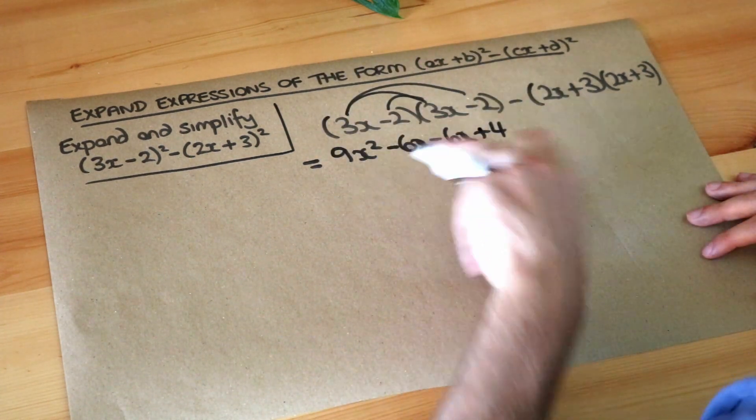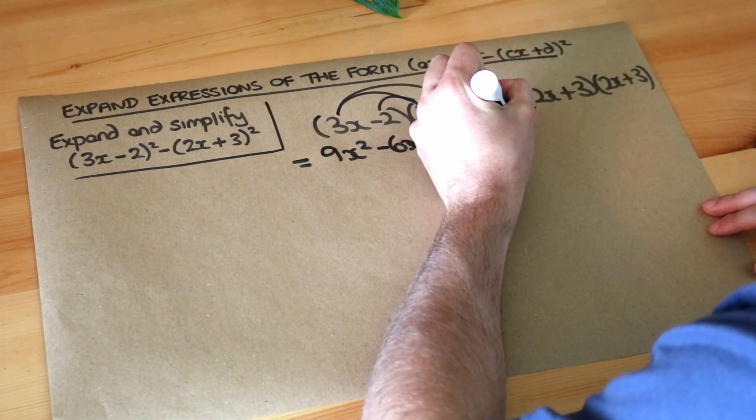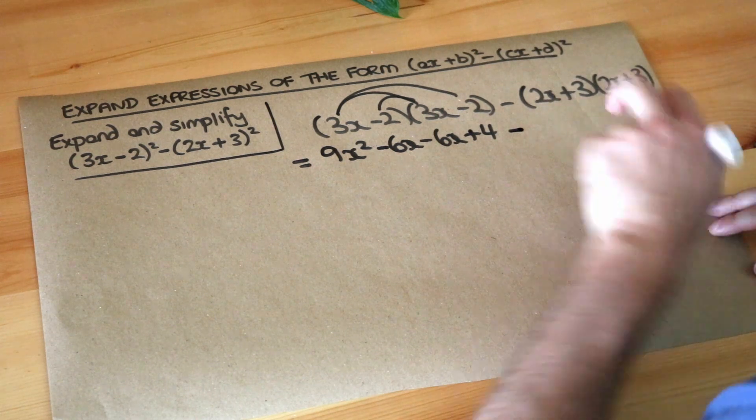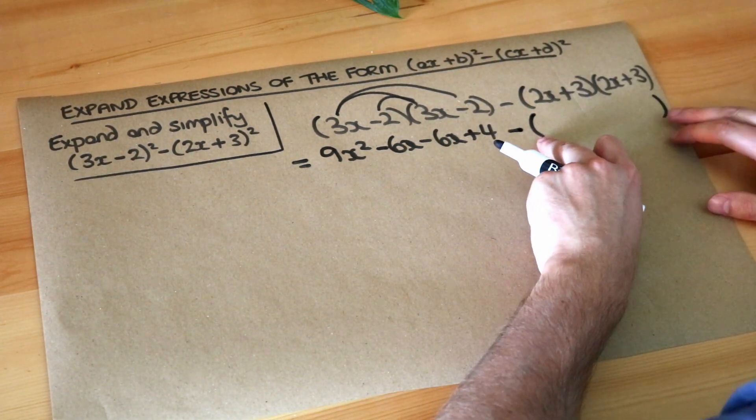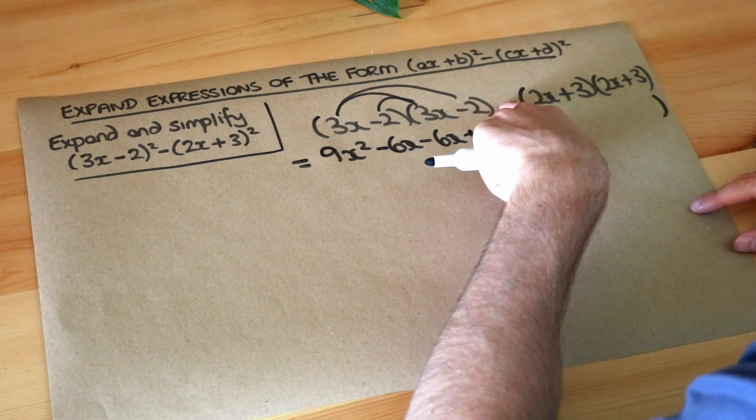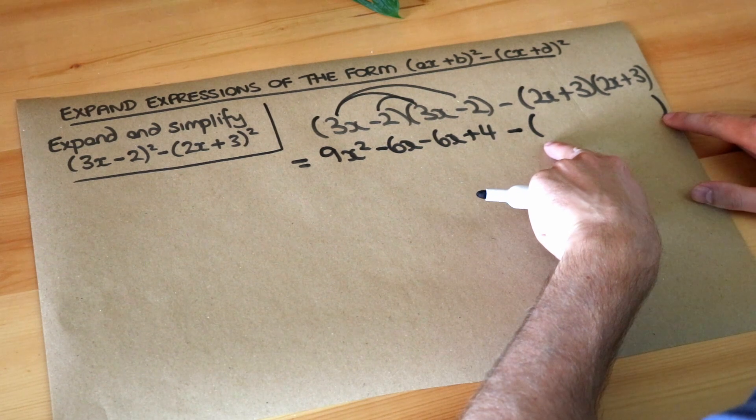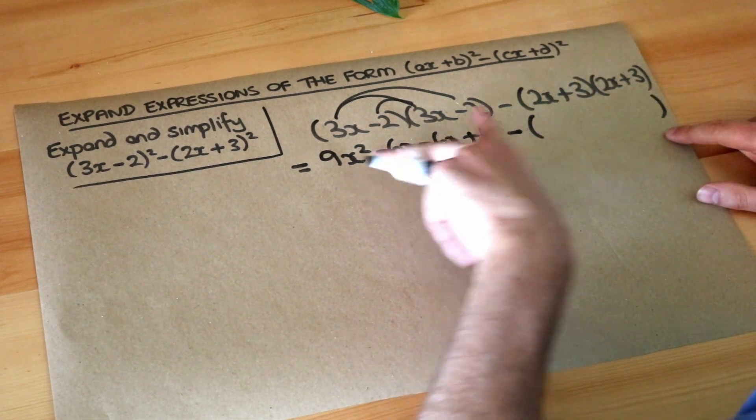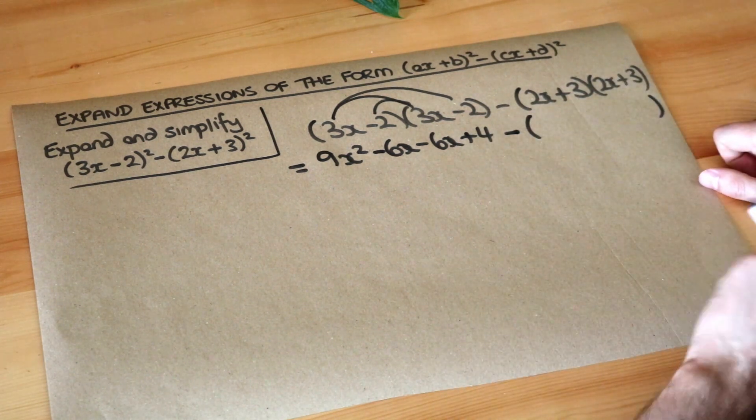We don't need to put brackets around this, but this is a really important thing or you'll get this wrong. When we expand out this bracket we need to put it in a bigger bracket, a single bigger bracket, and the reason is because we're subtracting all of this expansion here, so we need to put it in brackets first. We don't need the brackets here, but if you're subtracting something you're expanding, you must put that thing in brackets all the time.